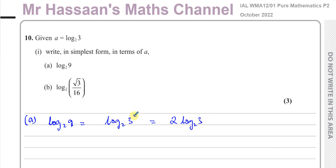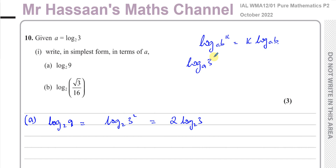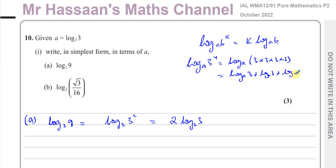The power law in logarithms states that log to the base a of b to the power of k can be written as k times log to the base a of b. This is based on the fact that log to the base a of 3 to the power of 4 can be rewritten as log to the base a of 3 times 3 times 3 times 3, and using the addition law, this splits into 4 separate log to the base a of 3 terms — giving 4 times log to the base a of 3.